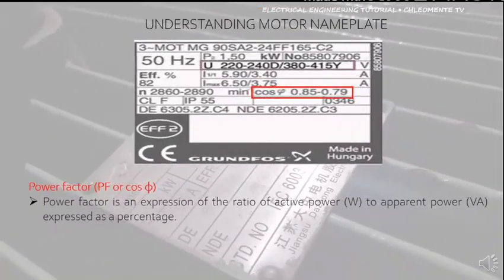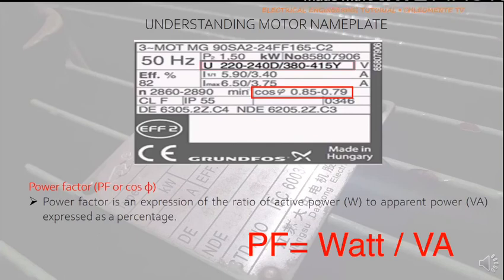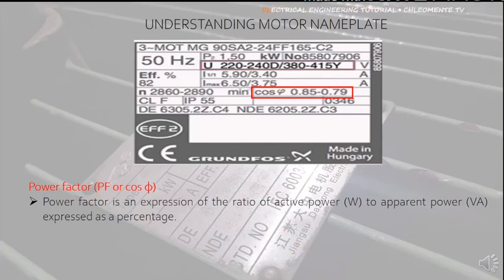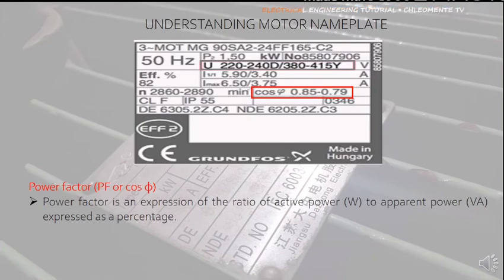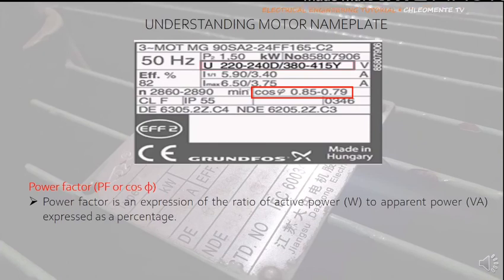Power Factor, denoted by PF or cos θ, is an expression of the ratio of active power (W) to apparent power (VA), expressed as a percentage. This data indicates the percentage of useful energy from the total energy. When the motor runs at low power factor, its efficiency is affected, meaning there are more losses. The power factor of a motor is lower when it is operating underloaded — it reduces when the motor is below 75% of its rated load. It is best practice to keep the motor running at a power factor of 85%.